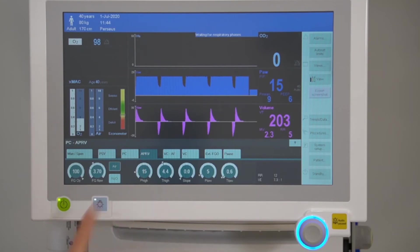APRV stands for airway pressure release ventilation. For devices that have been configured with APRV, this mode is ideal for patients with lung complications such as acute lung injury, atelectasis, or acute respiratory distress.